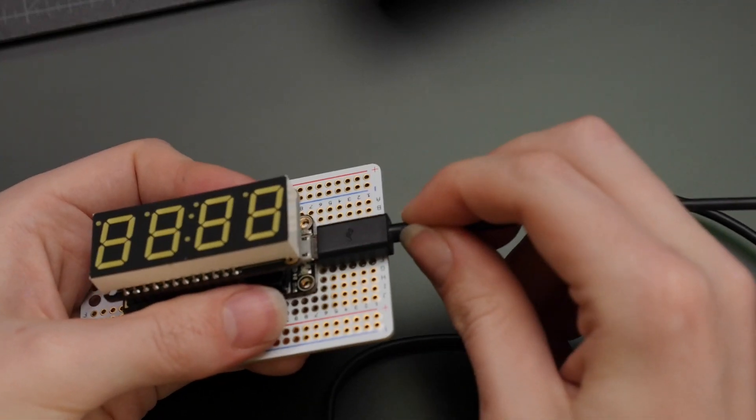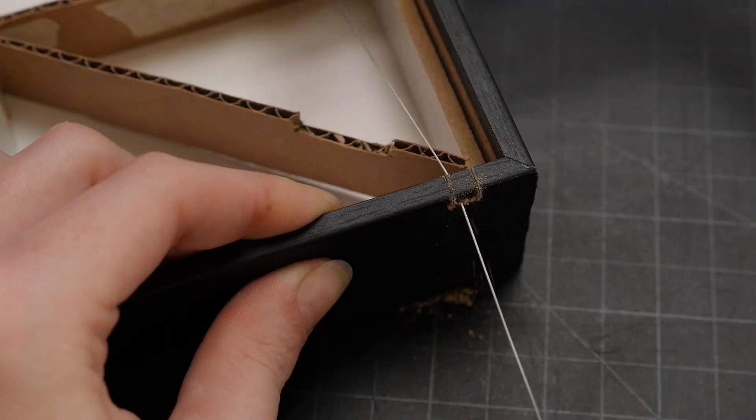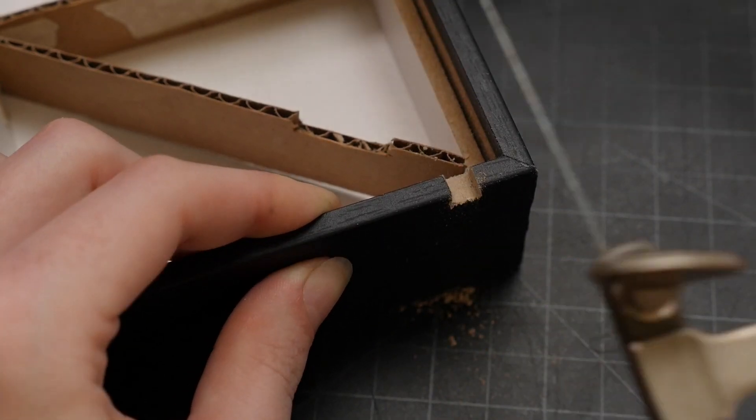I'm powering the device directly from its USB connection, so I cut a hole in the back of the shadow box and the frame to accommodate for the cable, but you could also use a battery for this project.